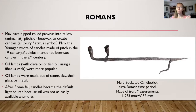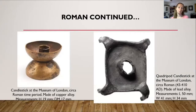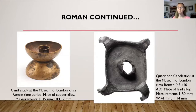As you can see on the left part of the candlestick holder, there are two holders for the candles, and then on the far right side is a hook, which allowed you to either hold it or hook it onto something when you weren't using it. If you remember, Romans did use candles. Here are some examples of candle holders. The picture on the left is a candlestick holder at the Museum of London, made out of copper alloy. The picture on the right is a quadruped candlestick, also at the Museum of London, from about 43 to 410 AD, made out of a lead alloy.